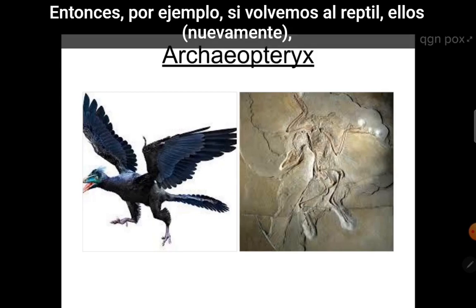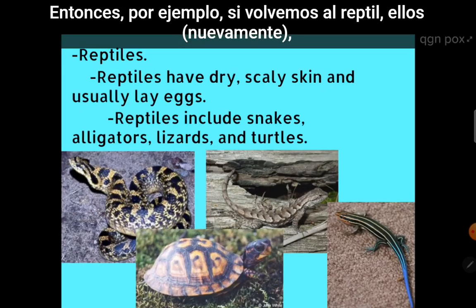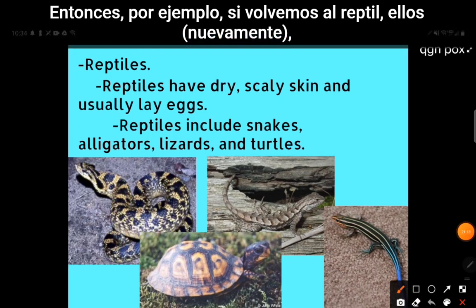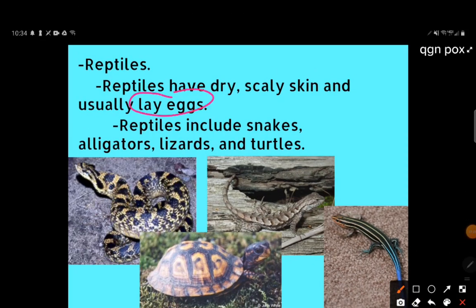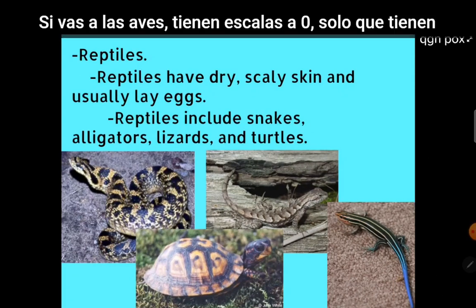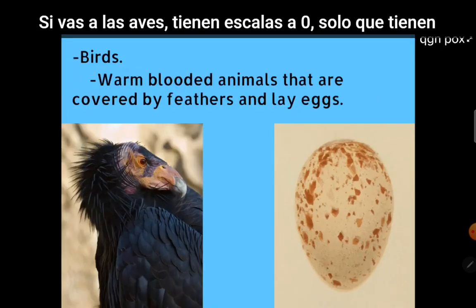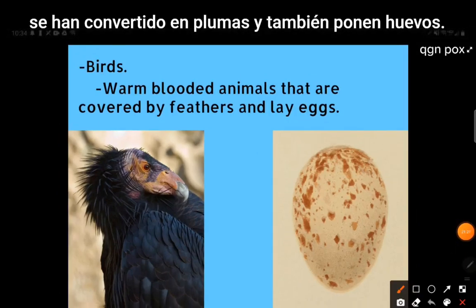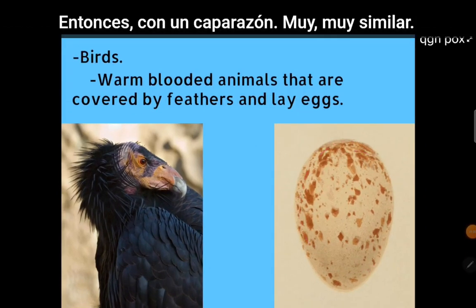Going back to the reptile — they lay eggs and have scales. Birds also kind of have scales, only they've been turned into feathers, and they also lay eggs with a shell. So very, very similar.